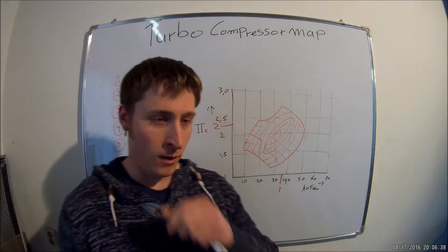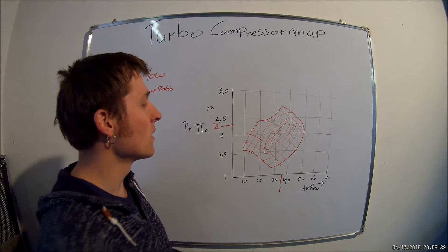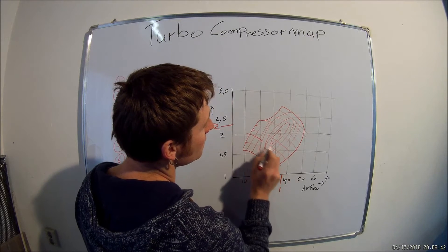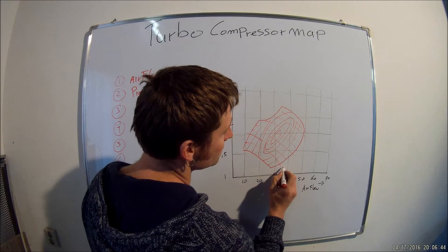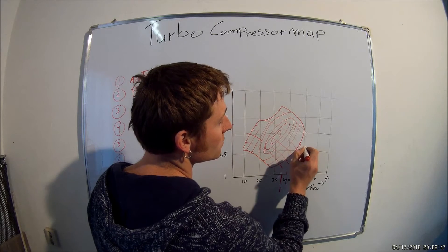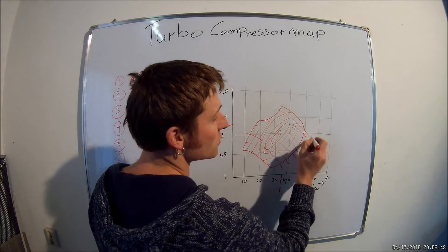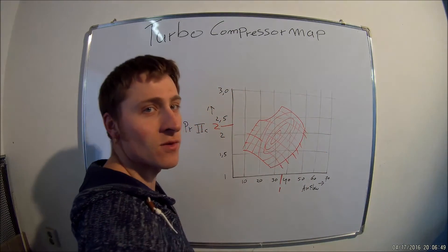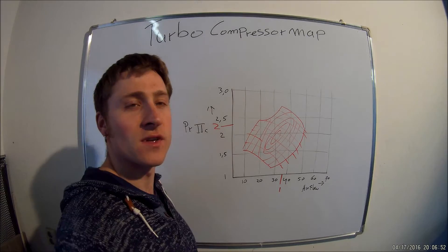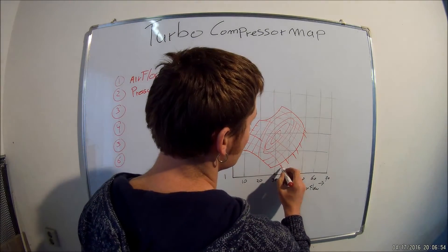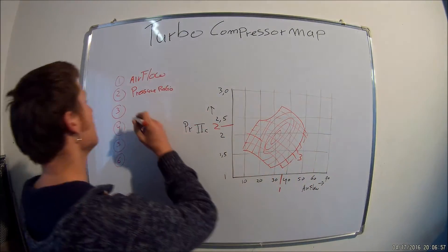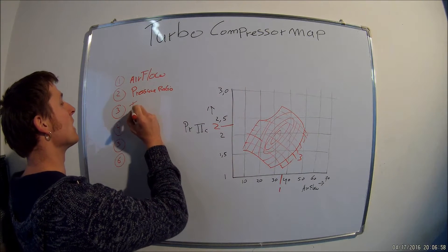Number three are these little lines. These are telling you how fast the turbo is running. For some turbos you can range from 50,000 RPM to 150,000 RPM. These lines are number three — turbo speed lines.